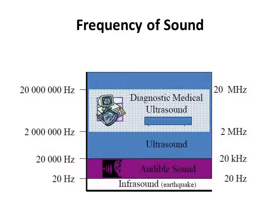According to frequency, sound waves can be divided into several regions. The first is infrasound, with frequency below 20 Hz. The second is audible sound, ranging from 20 Hz to 20 kHz. The third is ultrasound, with any frequency above 20 kHz. However, diagnostic medical ultrasound uses higher frequencies, ranging from 2 MHz to 20 MHz.